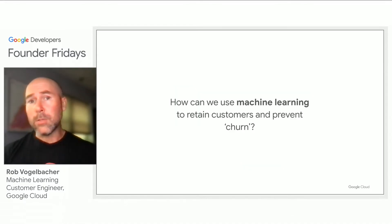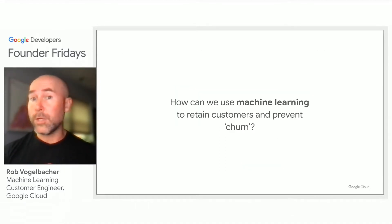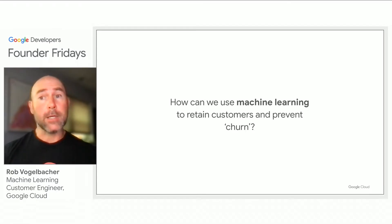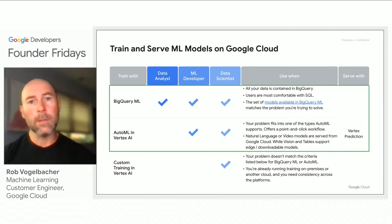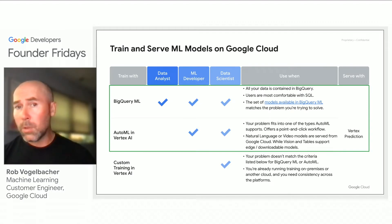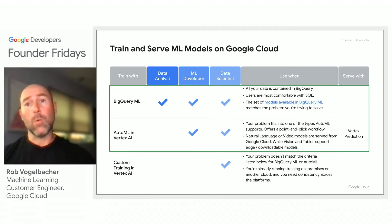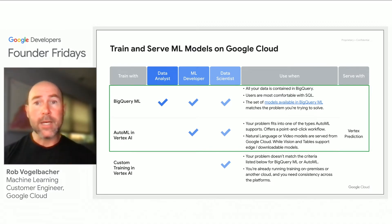So how can you use machine learning to help understand which customers are at risk of churning and help identify your most loyal customers who could further evangelize your services and products? With Google Cloud, we provide several different ways of building machine learning models that help you retain your customers and predict who is most at risk of churning.